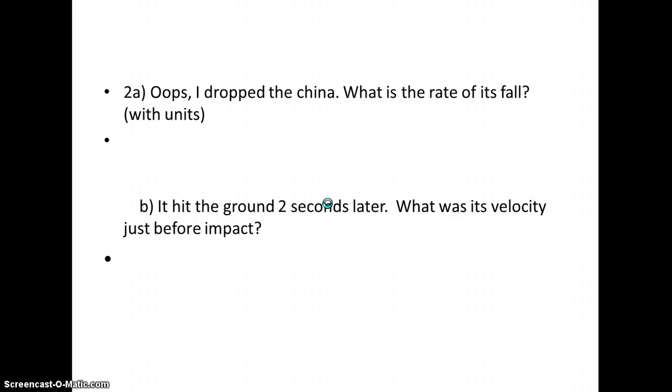So that's how you would solve anything that has to do with F equals mg. For the second problem, this is one we went through in class as well, where you drop the china. What is the rate of the fall? Rate is asking how quickly is it changing its speed. In other words, it's asking for the acceleration. So the acceleration for any free-falling object is 9.8 meters per second squared. So that answers that question.